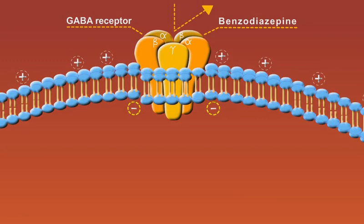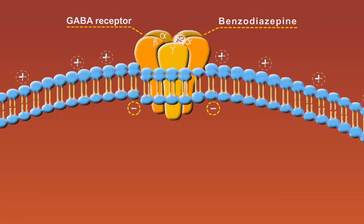The gamma-aminobutyric acid receptors, GABA receptors, are composed of a combination of five or more of the alpha, beta, and gamma subunit families. These receptors are ligand-gated chloride ion channels.